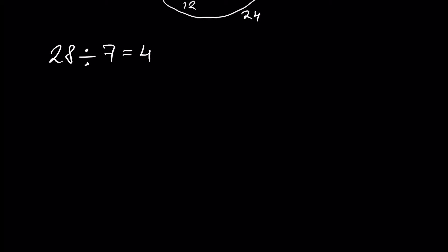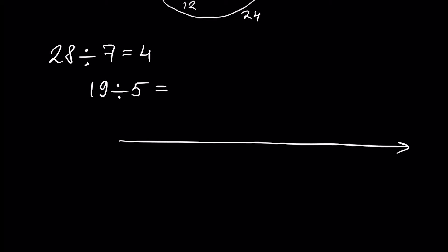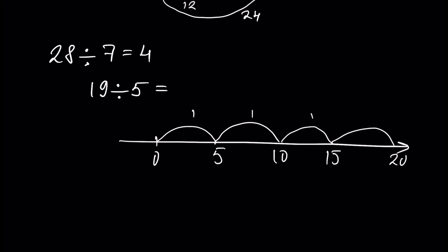So let's look at an example: 19 divided by 5. If we have 5 one time it's 5, two times is 10, three times is 15, and four times is already 20. Since 19 is between 15 and 20, 5 is contained in 19 three times. We write 3 times 5, which is 15, plus 4. And that 4 is called the remainder.